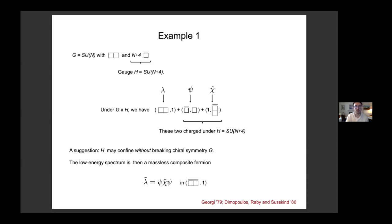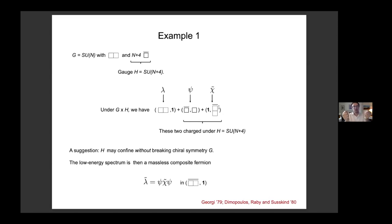As far as the H gauge dynamics are concerned, G has a 't Hooft anomaly. As I said at the beginning, if it has a 't Hooft anomaly, either G is broken giving Goldstone bosons, or G is unbroken and there must be a massless fermion in the infrared to saturate that 't Hooft anomaly. What these authors did was point out that the simplest H-singlet you can write down, assuming this gauge group H confines, is a fermion that does indeed saturate the 't Hooft anomalies of G. So these two fermions bind together through confinement but leave a massless composite fermion in the infrared.